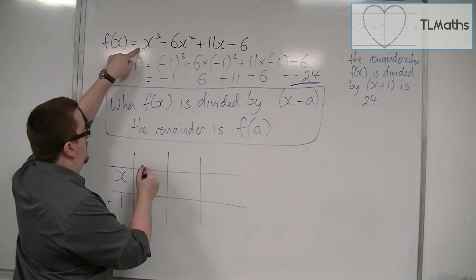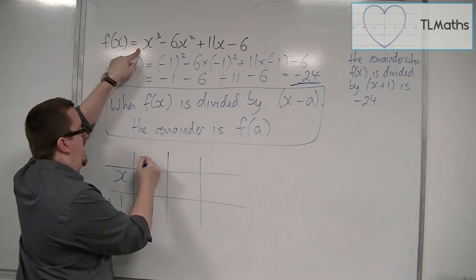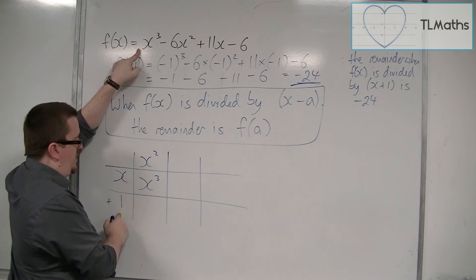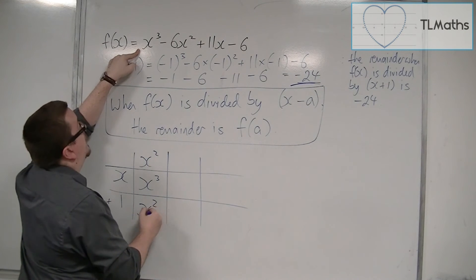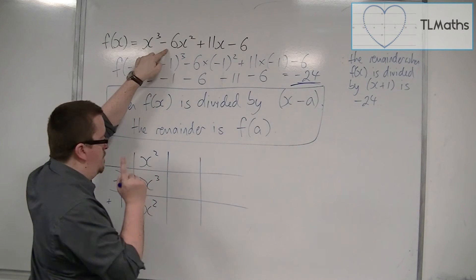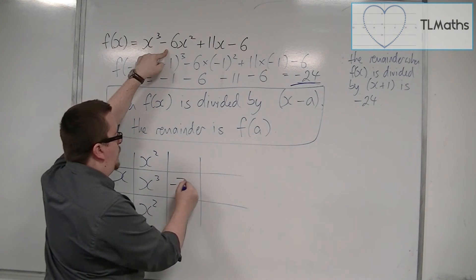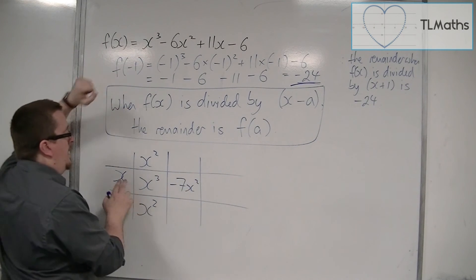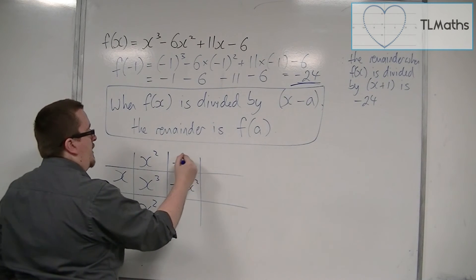I need x³, so I'd have to have x² there. x² times x is x³, x² times 1 is x². I don't want x², I want -6x², so I've got to take away 7x². x into -7x² goes -7x.